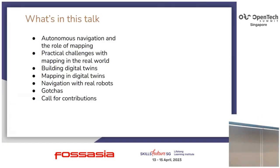Today I'll be talking about a few things. We'll start with a high-level overview of what autonomous navigation is and the role of mapping in this process, some of the practical challenges with mapping in the real world, the concept of digital twins and how we generate and build them, and then we'll get into mapping and navigation and talk about some pitfalls I've observed along the way.